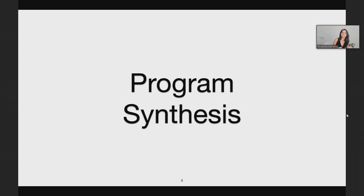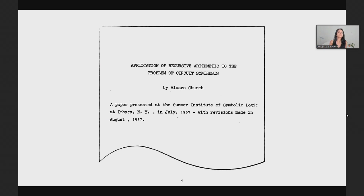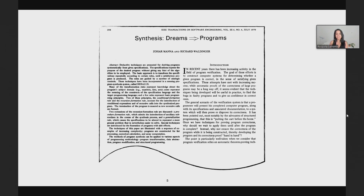And we can debate their meaning later on Slack. So program synthesis is actually not a recent keyword at all. It goes back at least to the 1950s to a problem posed by none other than Church about circuit synthesis. And also, we attribute it to this paper from the 1970s by Manna and Waldinger, which is quite dramatically titled as synthesis being the dream — something that takes a dream and converts it into a program.